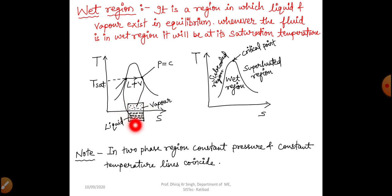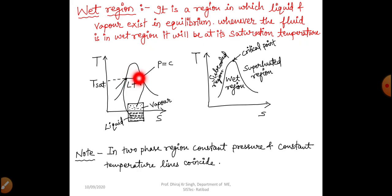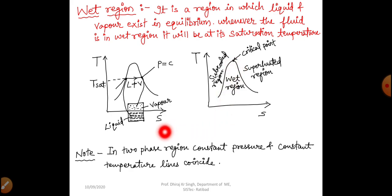In this diagram, the left point represents complete liquid and the right point represents complete vapor. In the wet region, the saturation temperature and constant pressure lines coincide. This is the subcooled region, this is the wet region, and this is the superheated region. The critical point is where the saturated liquid line and saturated vapor line meet. In the two-phase region, constant pressure and constant temperature lines coincide.